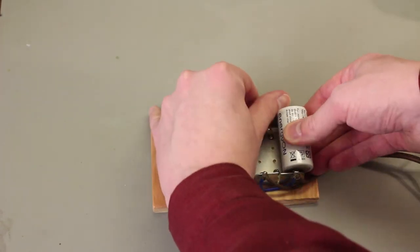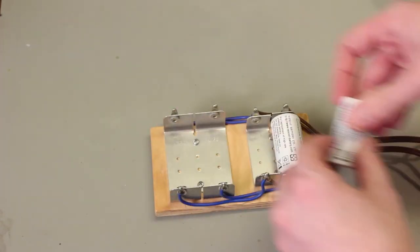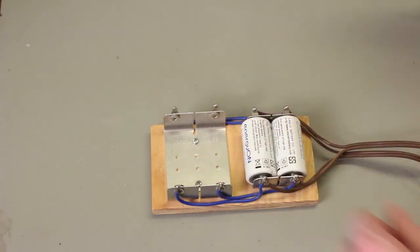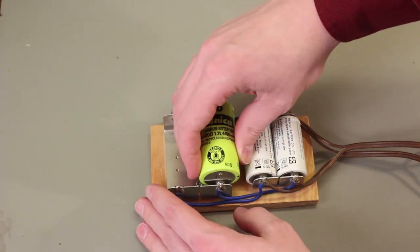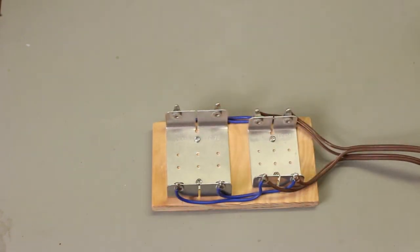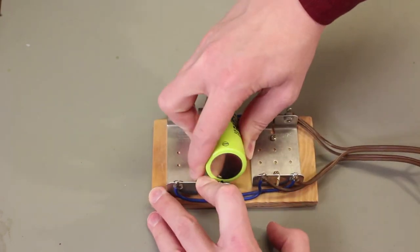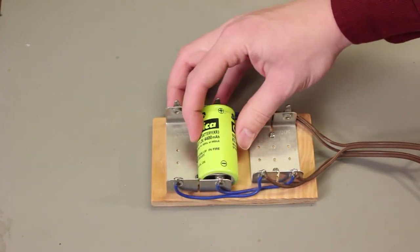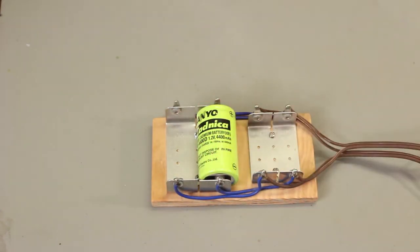So now I can very simply just insert two C cells or two Ds. You don't want to use both Cs and Ds at once because I have them wired in parallel. Two Cs or two Ds, and just the spring force of these holders is enough to hold those batteries in place.